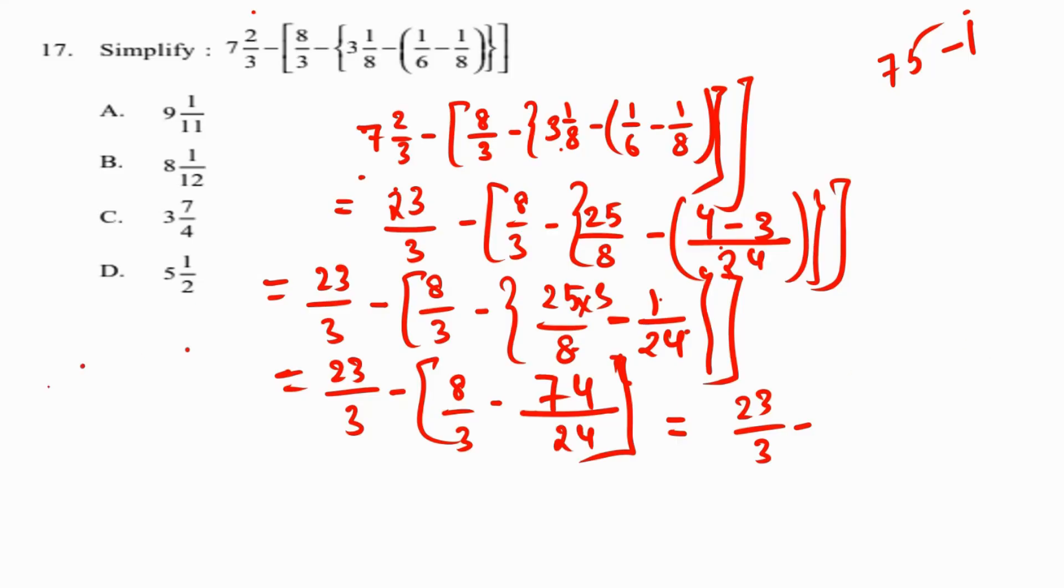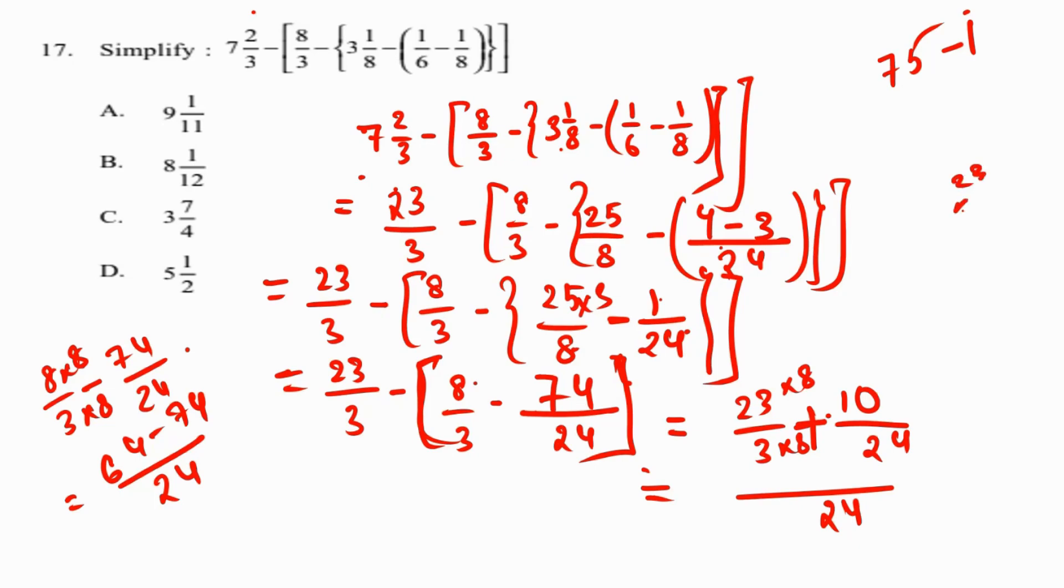Moving to the next step: 23/3 minus 8/3 minus 25/8 minus 1/24. Let's solve the bracket. The LCM is 24. 8/3 minus 74/24 gives us 64/24 minus 74/24, which is minus 10/24. Minus minus becomes plus. So 23/3 plus 10/24. With LCM 24, we get 184/24 plus 10/24 equals 194/24. Simplifying by dividing by 2 gives 97/12, which is 8 1/12. Option B.